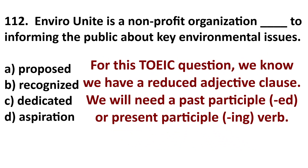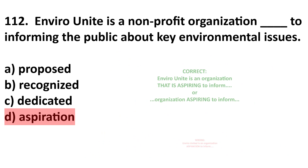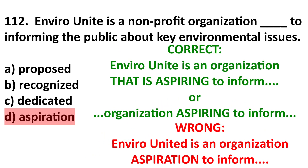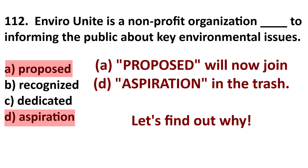We know we need some form of verb — it might be a gerund or it might be a passive voice -ed form. Therefore we can eliminate D because we need a verb here. 'Aspiration' is a noun; the verb is 'aspire.' You could say 'a non-profit organization aspiring to inform,' but aspiration is a noun, so we eliminate it.